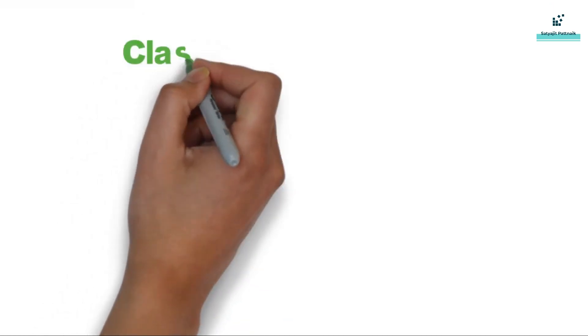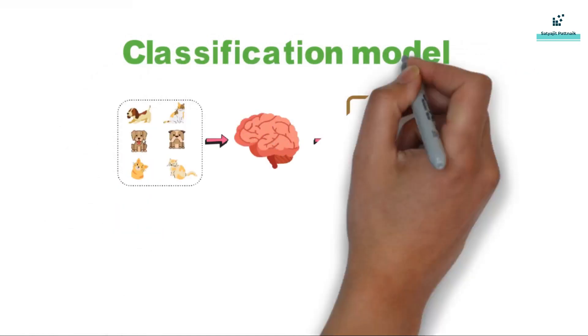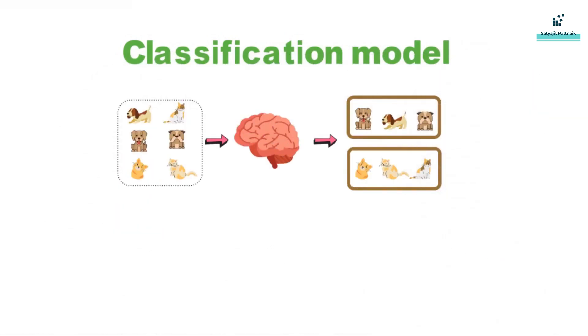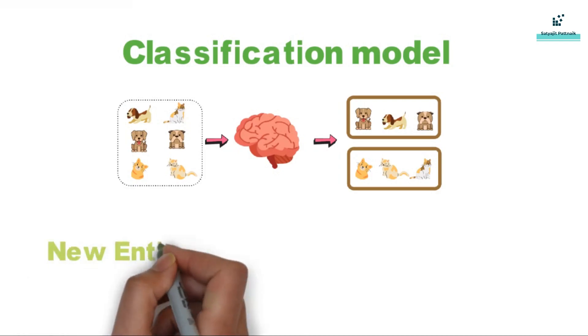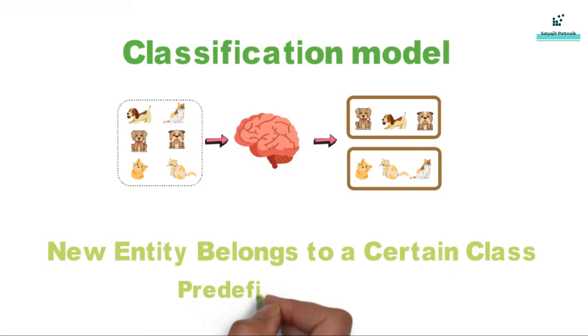After regression, next we will be talking about classification. What is a classification model? Here the output is discrete. Let's say you want to predict whether a transaction is fraudulent or not. In a problem where we are predicting whether a new entity belongs to a certain class or a certain type, that's basically a classification model, which means we are going to classify the data into predefined classes.